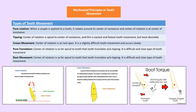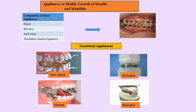Pure rotation occurs when the tooth rotates around the center of resistance and the center of rotation are at the same point when a couple is applied. Tipping is the easiest movement but least desirable as it can happen unintentionally. For crown movement, the center of rotation is at the root; for root movement, the center of rotation is at the crown. Root movement is the most difficult tooth movement, while tipping is the easiest. Fixed appliance components include bands, brackets, arch wires, and auxiliaries.